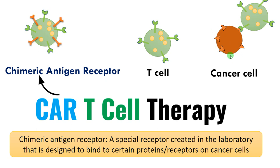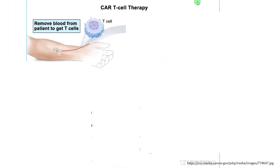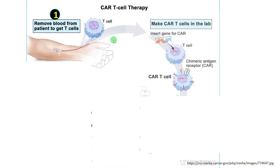Now let us see the steps involved in CAR T-cell therapy. Step one: remove blood from the patient to get T-cells. White blood cells are collected, and from that the T-cells are separated.